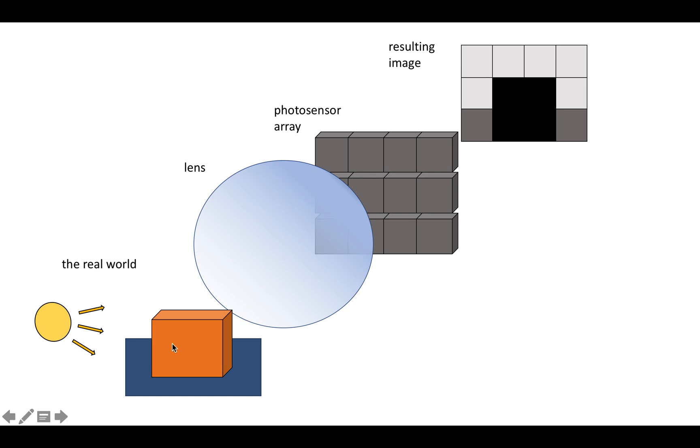So you can take the real world with some objects in it and a light source that's emitting photons, and the lens can focus these photons to hit this photosensor array. And you can interpret the intensity of light or the electrical signal coming out of each of these photosensors stacked up in this 2D grid as a pixel or an intensity of light and put them together into an image.